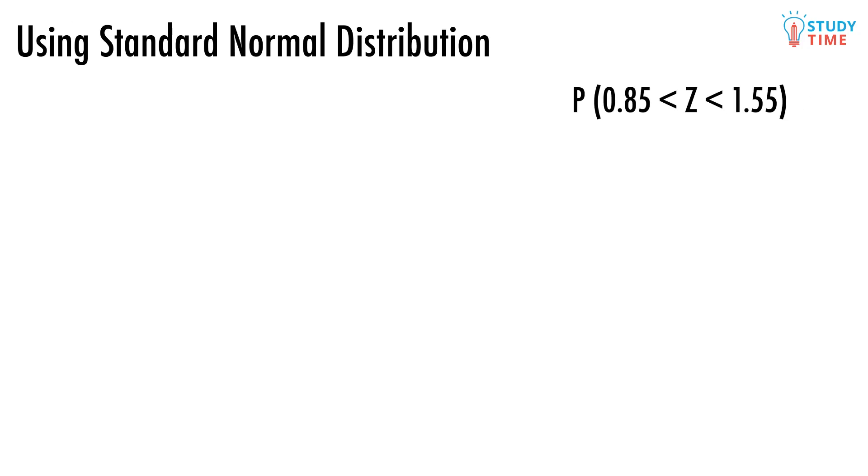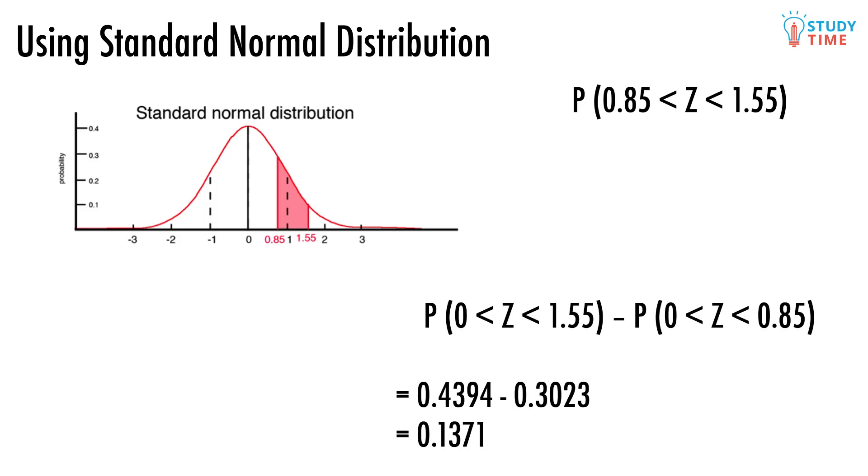There's two more types of normal distribution questions that you might end up being asked. The first one would be something like this. On a diagram, we're being asked to find the size of this area. The reason this becomes a little tougher than the problems we've looked at so far is because it actually ends up requiring us to hunt down two different probabilities, and then subtract one from the other. That's because the only way to find the answer to this problem is like this.